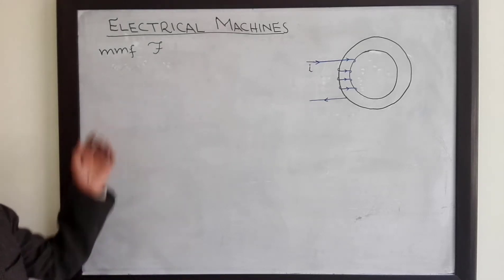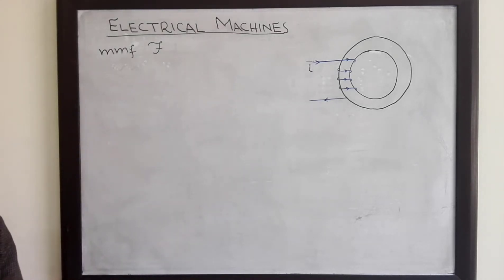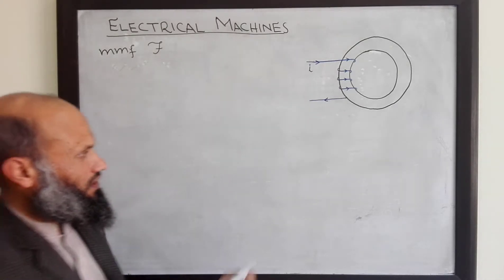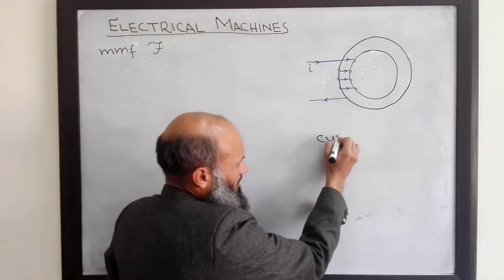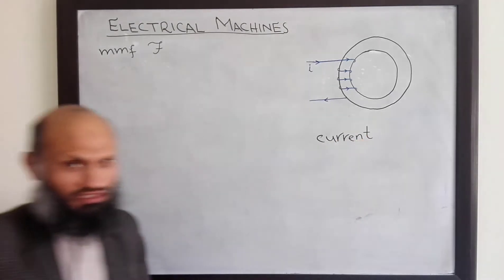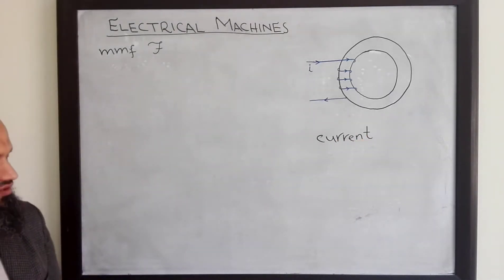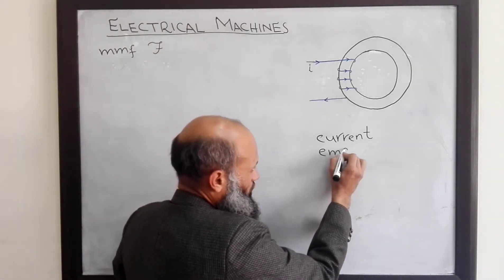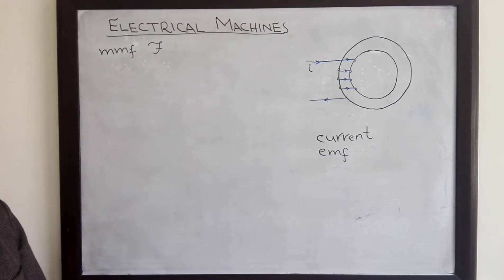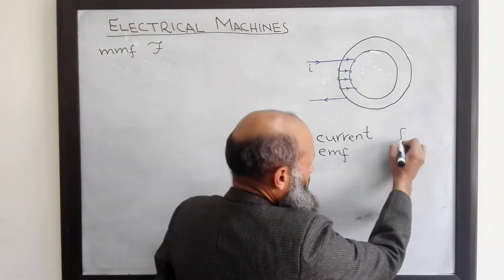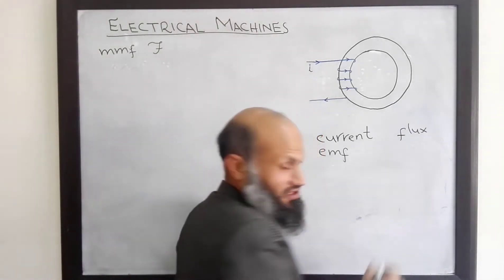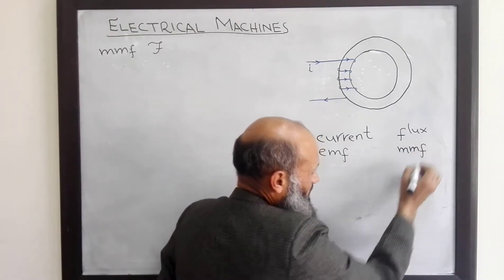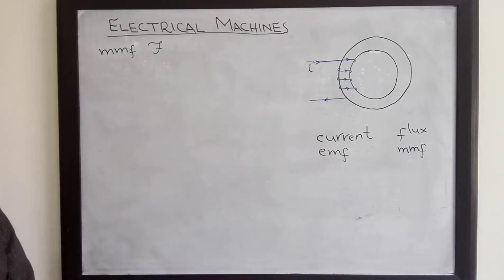Next, we define a few terminology for magnetic circuits. This will be useful for the analysis of magnetic circuits. In electrical circuits, current is flowing and the quantity which is responsible for the flow of current is called electromotive force, EMF. In magnetic circuits, flux is flowing and the quantity which is responsible for the flow of flux is called MMF, magnetomotive force.